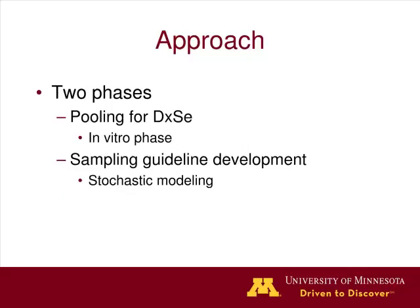A second phase was added to look at the effect of pooling on diagnostic sensitivity. We found that increasing pool size increased detection rate and saved dollars. However, when applying this to low prevalence herds, we had concerns because the collection population had been actively exposed — gilts in a GDU — and CT values matter with pooling. This led us to design a new study with two phases: a lab-based phase on pooling and a stochastic modeling phase to develop sampling guidelines.